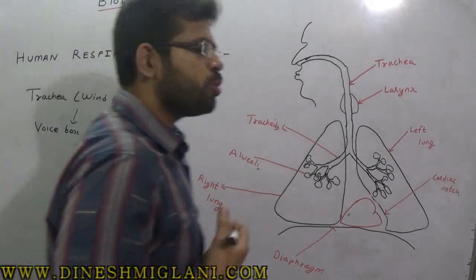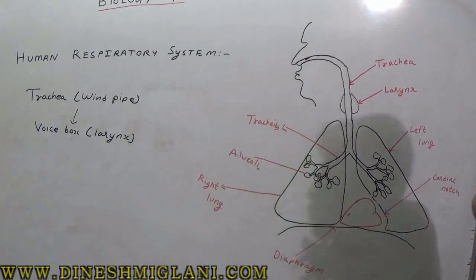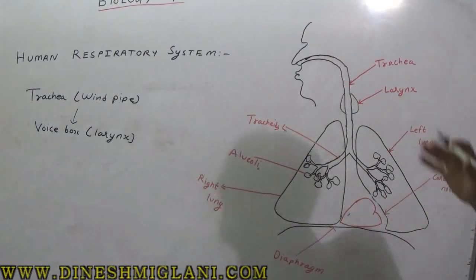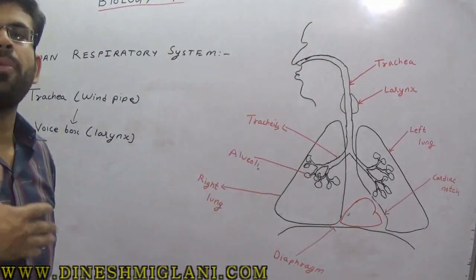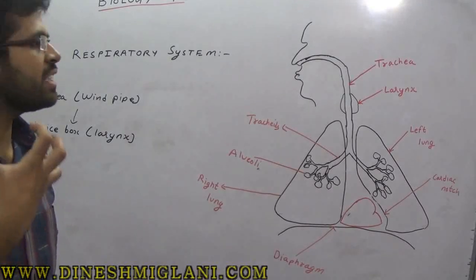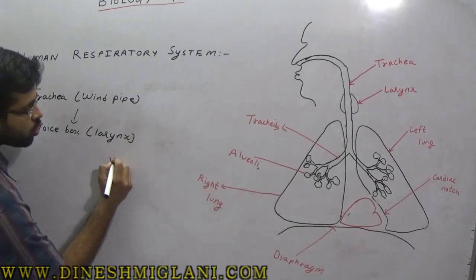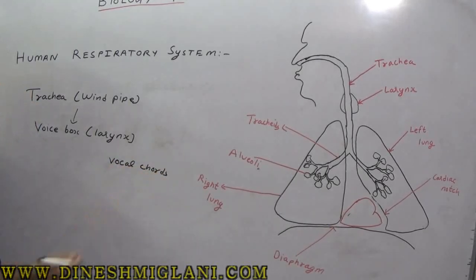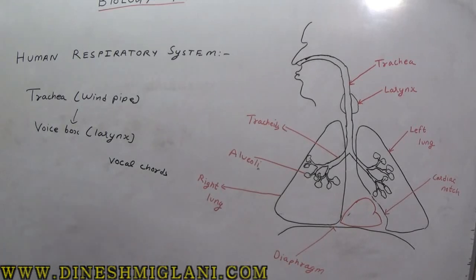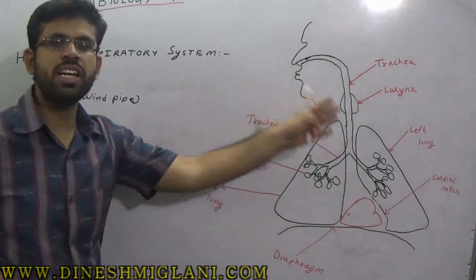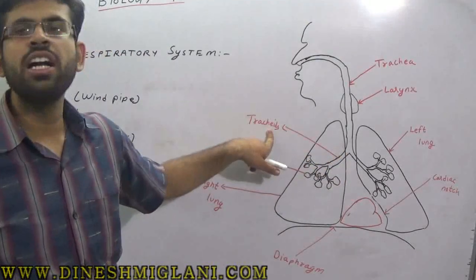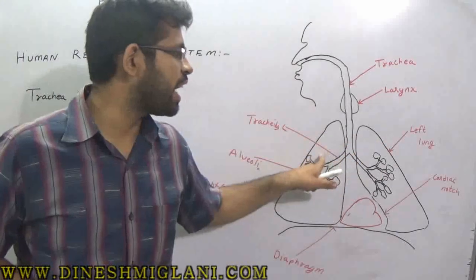The larynx, or voice box, is the organ responsible for all sounds we produce. It is attached to the trachea. When we want to speak, the vocal cords inside the larynx vibrate due to air pressure coming from the lungs, and that vibration produces sound. The trachea further goes down and splits into two parts called tracheids, each supplying one of the two lungs.